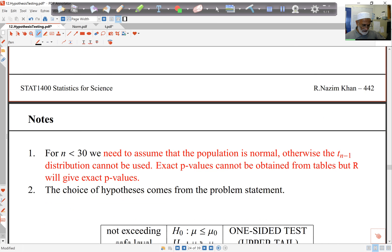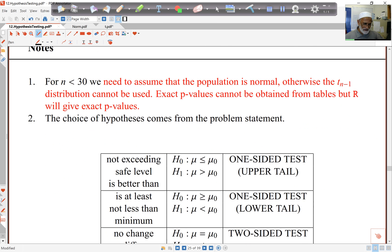Just some final notes here. Assumptions: if my sample size is small, I will need to assume population comes from some normal distribution. Otherwise, the t-distribution can't be used. And again, exact p-values, of course, will be obtained from R or tables.